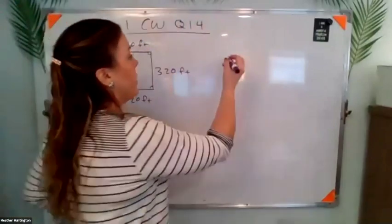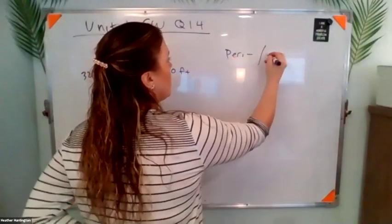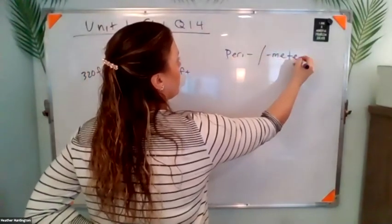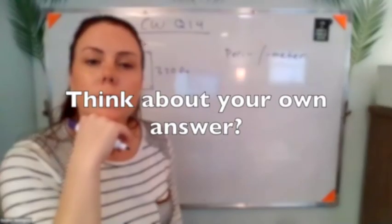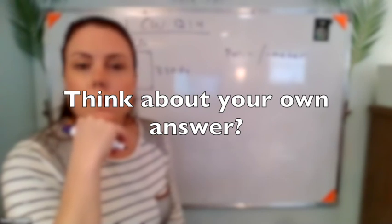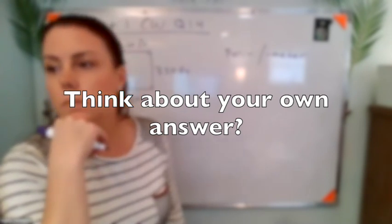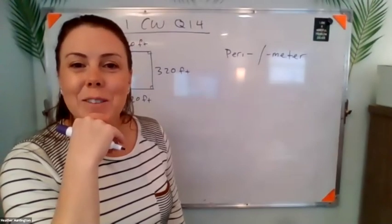Okay, so it used the word perimeter. What does perimeter mean? The outside. Okay, the outside.